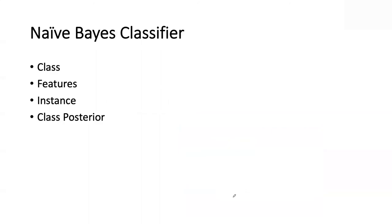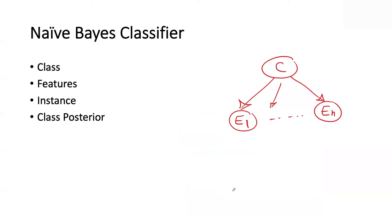A naive Bayes classifier is a special case of a Bayesian network where the structure is simply a class variable C with a bunch of children called features. The key independence property: if you tell me what the class is, the features become independent. In general the features are not independent, but given the state of C, they are. We're going to use this fact to compute the class posterior for classification.